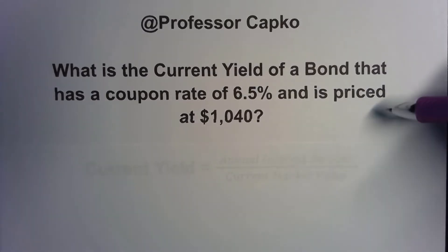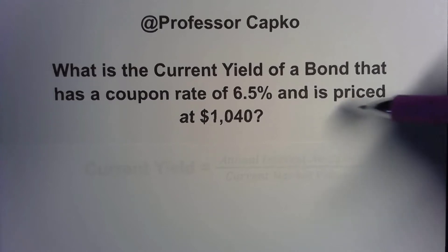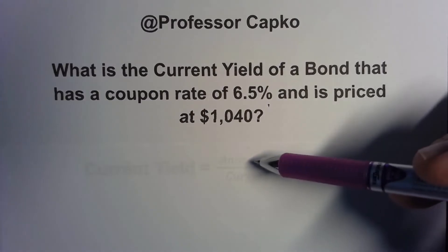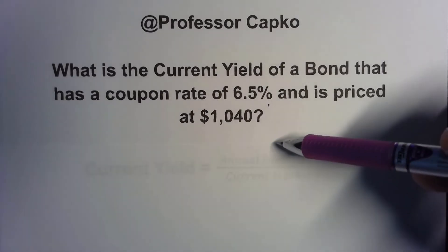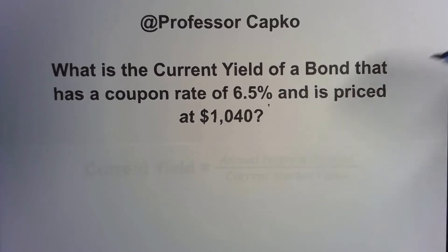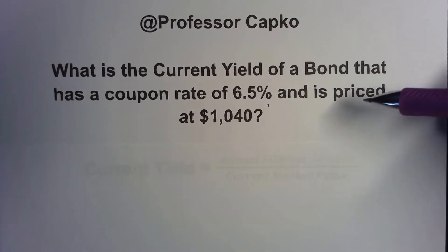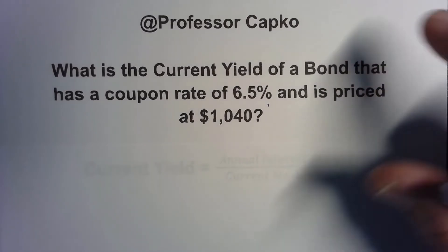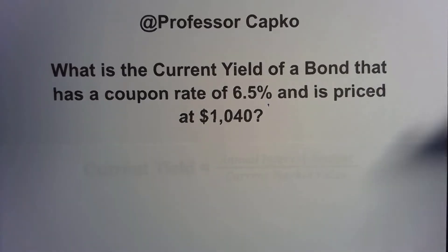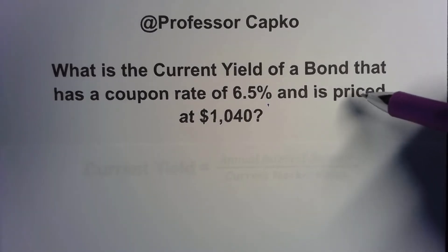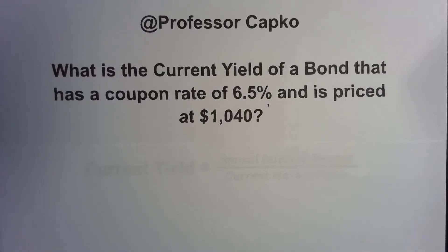Let me show you today how to calculate the current yield of a bond that has a coupon rate of 6.5% and is priced at $1,040. Bonds are evidence of debt. If you're not familiar with bonds, I've got a link up here that is an introduction to bonds. Today we're trying to figure out what the current yield is of this particular bond.